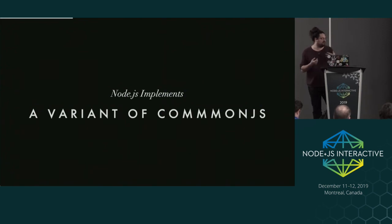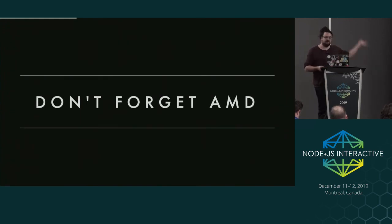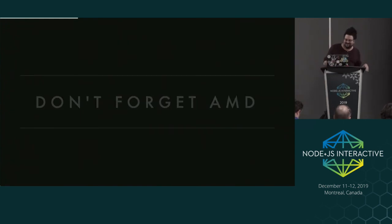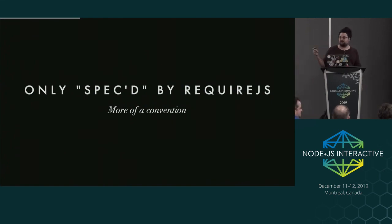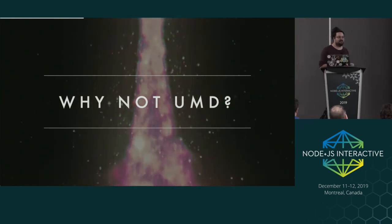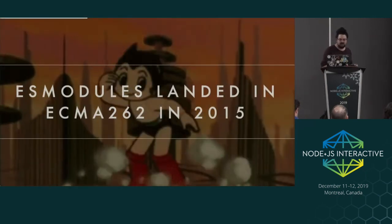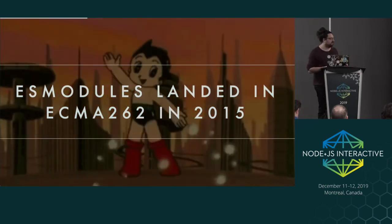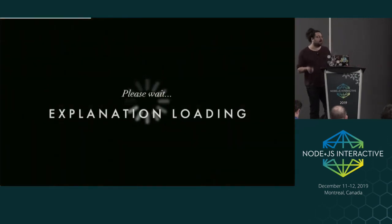Node.js implements a variant of CommonJS, and we could arguably say it's the primary reference implementation of CommonJS as it's known today. Anyone remember AMD? AMD was only spec'd by RequireJS - more of a convention. It was nice because it was asynchronous and worked better for the browser. If any of you did Angular back in the day, it was basically AMD. UMD was a thing too, in case you couldn't make up your mind and just wanted to ship something all loaders could handle. ES modules landed in ECMA-262 in 2015, so we could have had the future of modules, but they're not here yet. So why did it take so long?